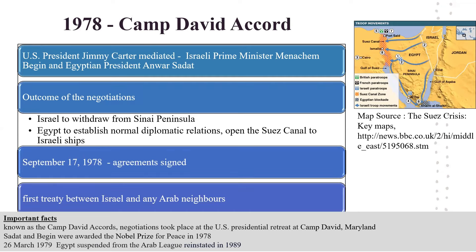In 1978, US President Jimmy Carter mediated discussions between Israeli Prime Minister Menachem Begin and Egyptian President Anwar Sadat. After several days of negotiation, Israel agreed to withdraw from the Sinai Peninsula and Egypt promised to establish normal diplomatic relations between the two countries and also agreed to open the Suez Canal to Israeli ships. The agreements were signed on September 17, 1978, and it was the first treaty between Israel and any of its Arab neighbours. Sadat and Begin were awarded the Nobel Prize for Peace in 1978. Egypt was suspended from the Arab League on 26 March 1979 after signing the agreement and was reinstated as a member of the Arab League in 1989. These negotiations are popularly known as the Camp David Accords because the negotiations took place at the US Presidential Retreat at Camp David, Maryland.